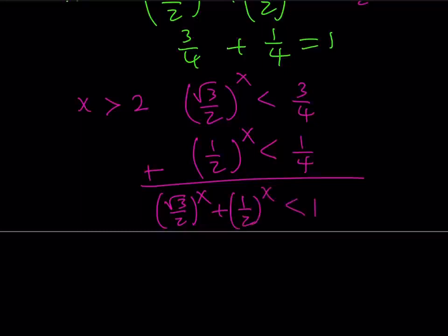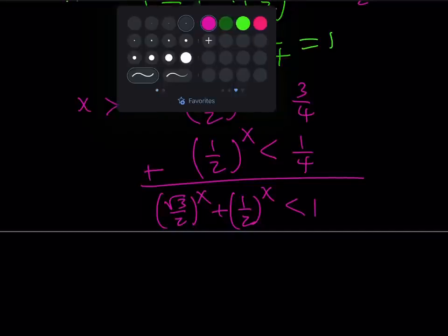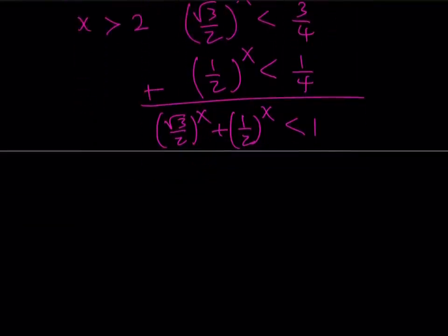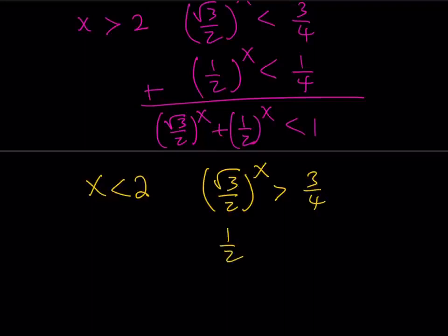So, anything greater than 2 is not going to work. So, we need to find something else. What happens if x is less than 2, right? Let's take a look at that one as well. Well, if x is less than 2, then square root of 3 over 2 to the power x, now notice that as x gets smaller and smaller, think about the negatives, think about 0.1, stuff like that, the answer is going to get larger. So, this is going to be greater than 3 fourths. And the same thing applies for 1 half to the power x, it's going to be greater than 1 fourth.